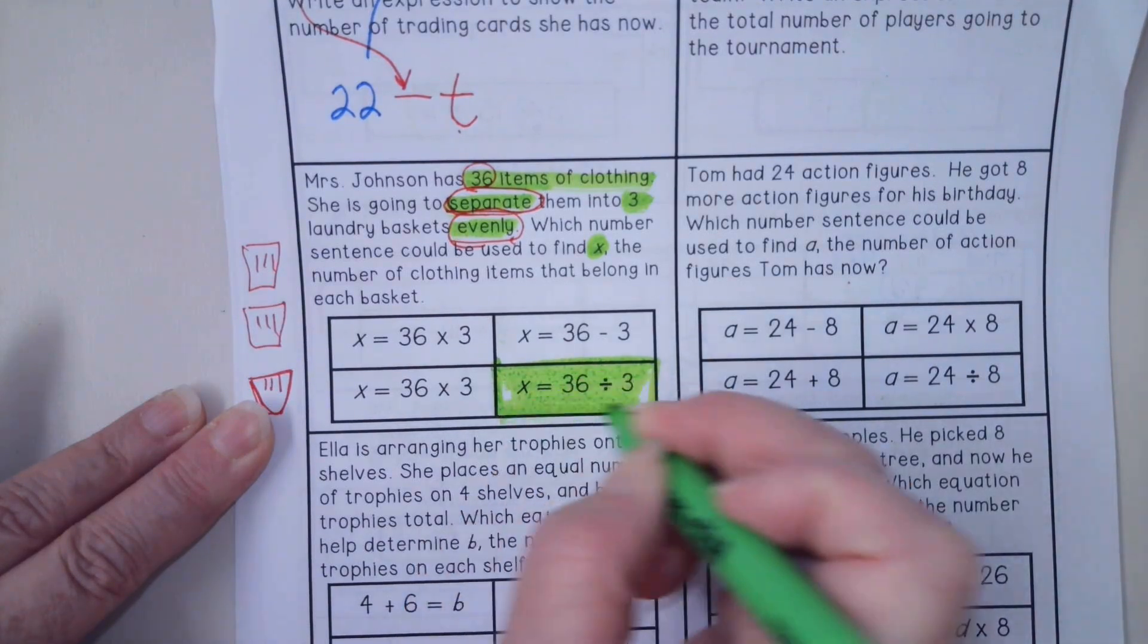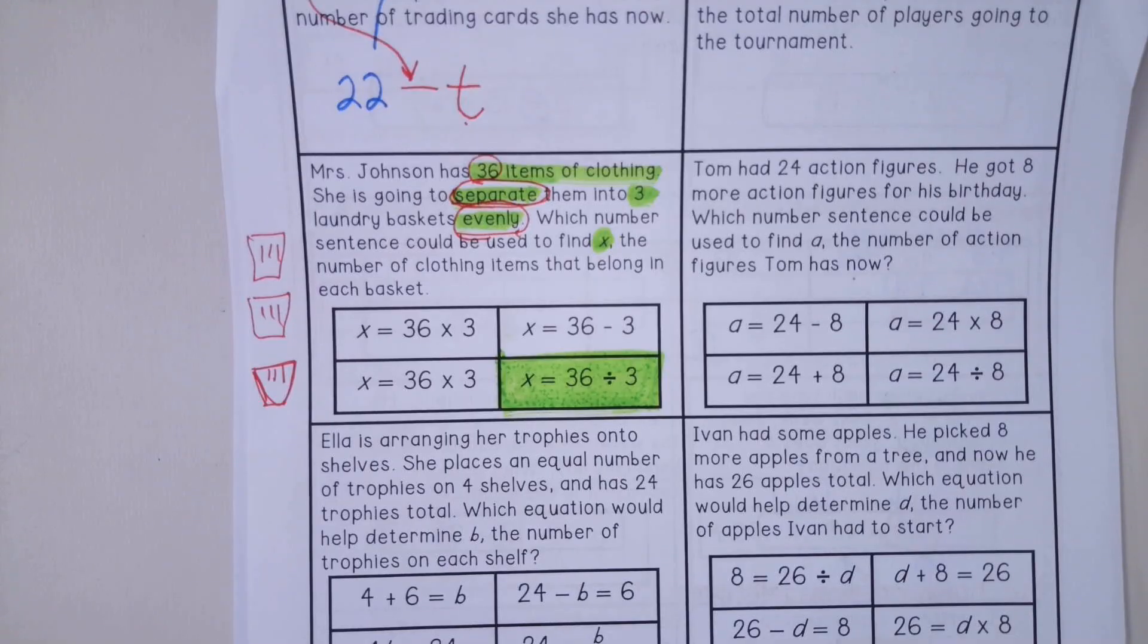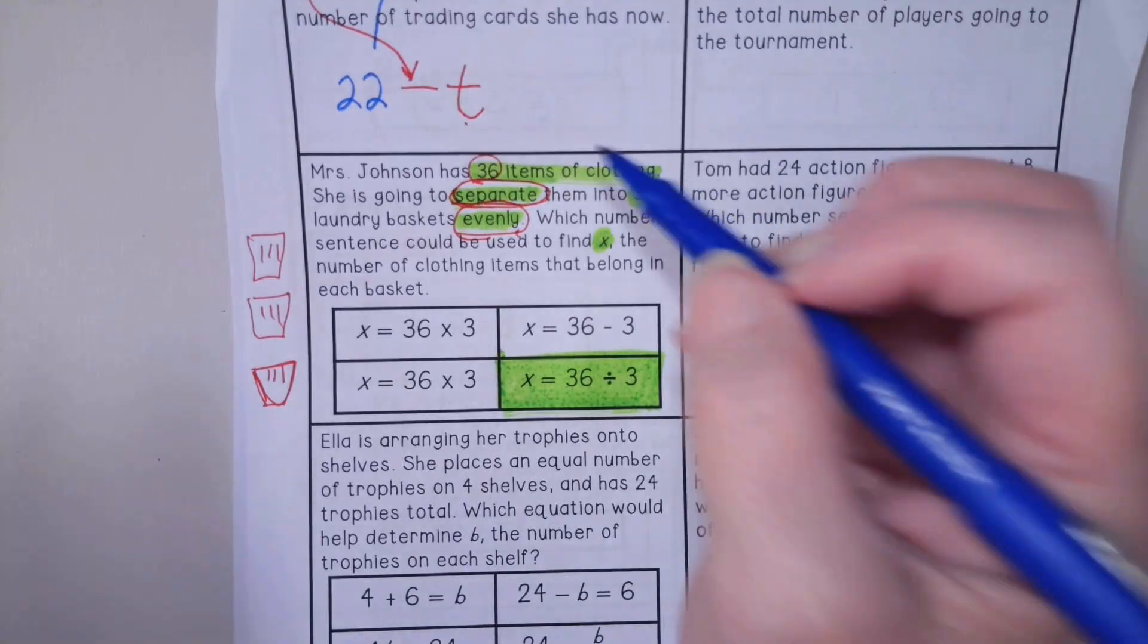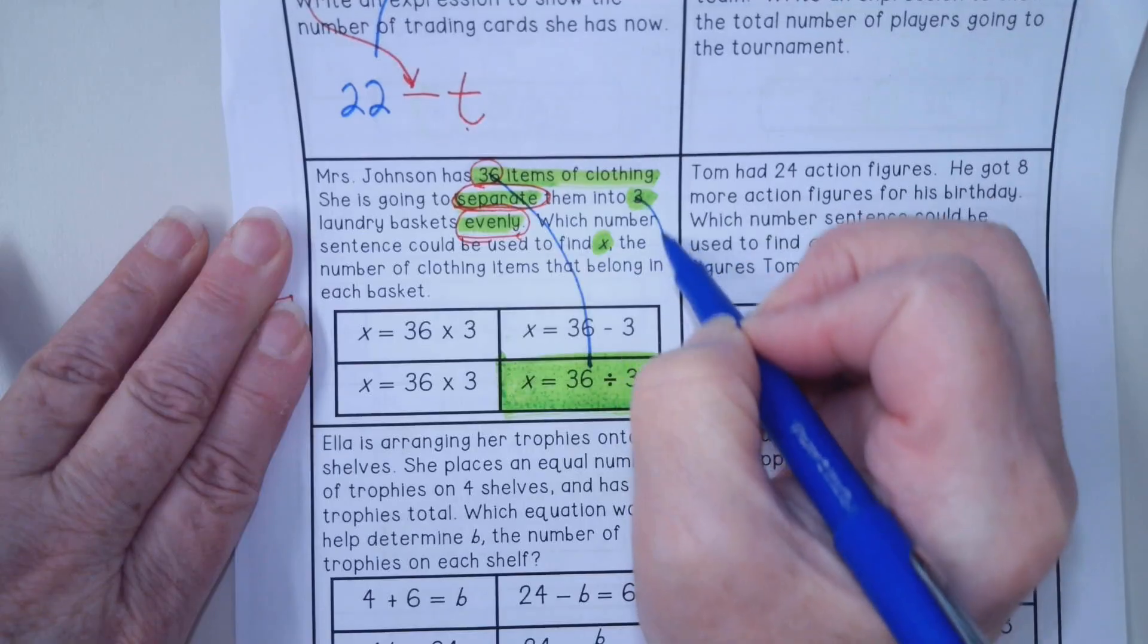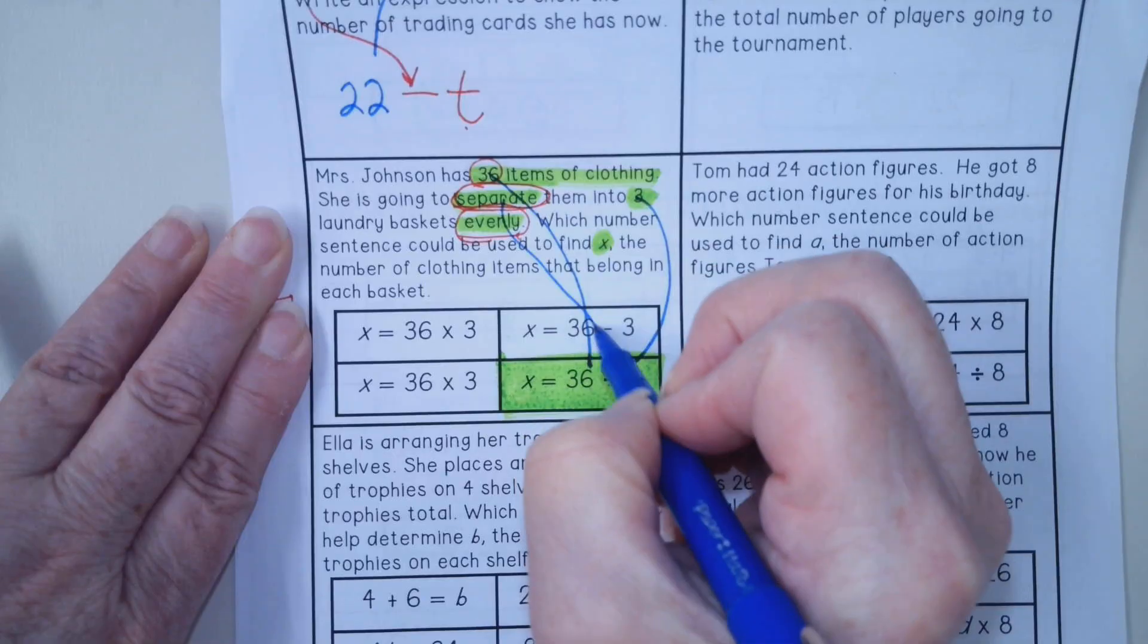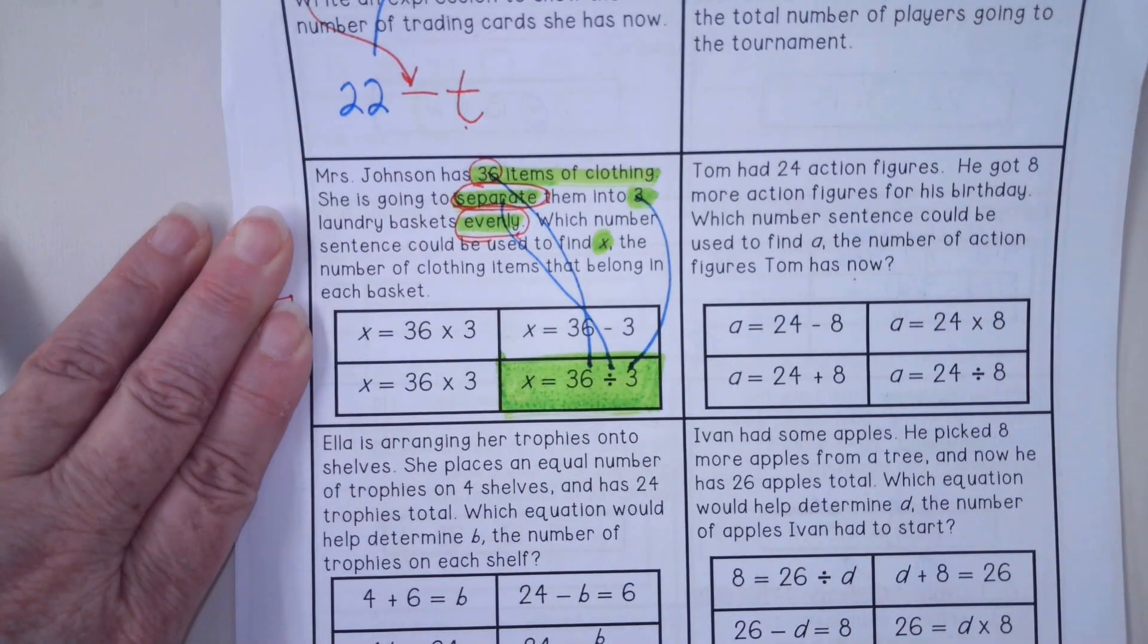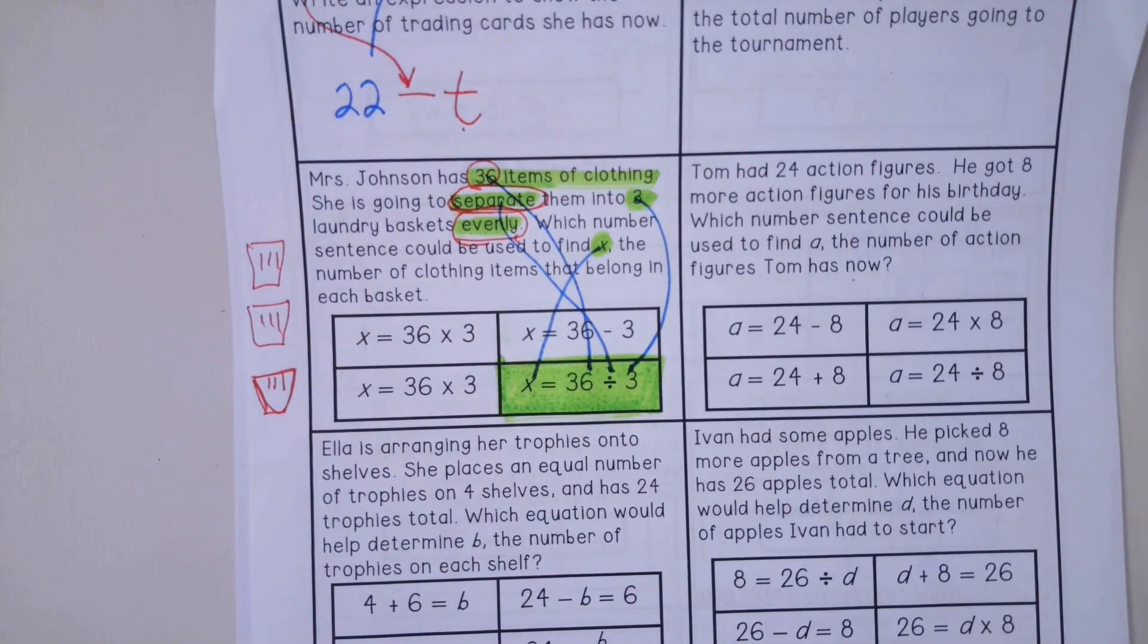36 divided by three. Look at all my numbers. I have the 36. I have the three. I know that I am separating them evenly. That's my division. And I have my X. When we write these word problems, we have to think about all of those components.